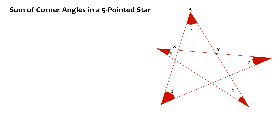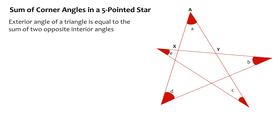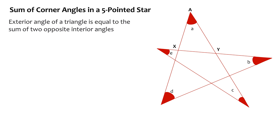In this case we can use a geometric method — the exterior angle property of triangles. We know the exterior angle of a triangle is equal to the sum of the two opposite interior angles. This means in triangle PQR, angle PQT equals angle P plus angle R. Let's now look at the pentagram. We can see there is a triangle whose one exterior angle is angle AXY. Using the same logic, angle AXY equals B plus D.